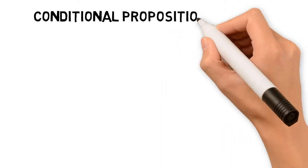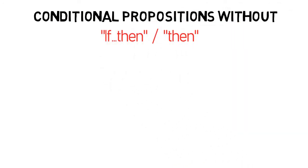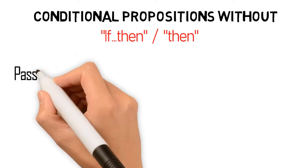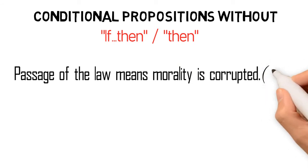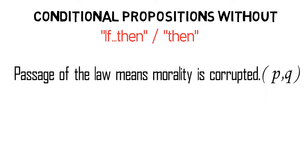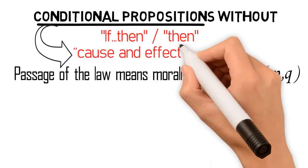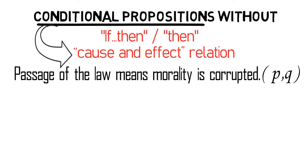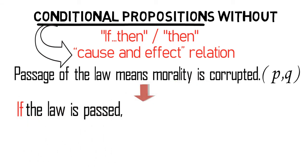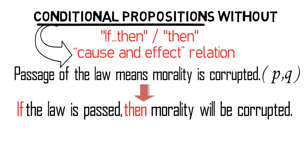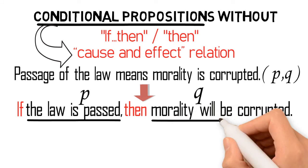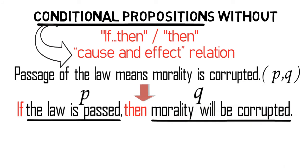Please note as well that there are cases wherein the words 'if...then' are not mentioned in the proposition, yet the proposition remains a conditional one. Consider this example: 'Passage of the law means morality is corrupted' — P, Q. If we analyze this proposition, it is very clear that it is a conditional proposition because it suggests a cause-and-effect relation. Thus, the proposition can be stated as: 'If the law is passed, then morality will be corrupted.' If we let P stand for 'the law is passed' and Q for 'morality will be corrupted,' then the proposition is symbolized as P then Q.